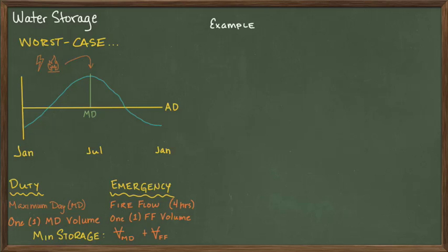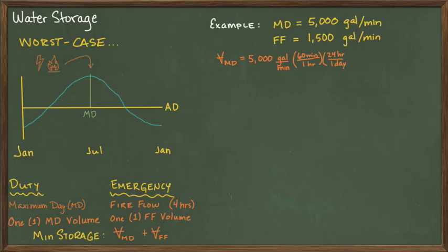Let's assume that we just finished computing the water demand for a large community. The maximum day demand for this community is 5,000 gallons per minute. And based upon the structures that we are building in the neighborhood, we have a minimum fire flow of 1,500 gallons per minute. The volume of the maximum day demand after 24 hours of flowing is computed as 5,000 times 60 minutes per hour times 24 hours in a day. And this gets us 7.2 million gallons required just for the duty storage of one max day demand.